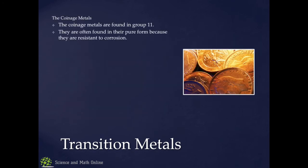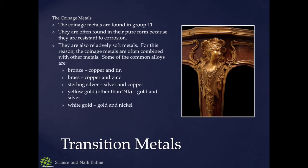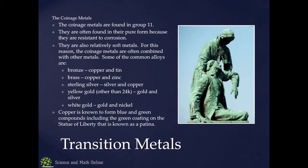Coinage metals — found in group 11. They are often found in their pure form because of their resistance to corrosion. They are relatively soft and generally tend to be combined with other things — we get brass, bronze, sterling silver, 14 karat gold, 10 karat gold, white gold, and such. Copper is the only one known to somewhat corrode — it gets a patina of copper oxide on the outside, which forms a green coating on statues. The Statue of Liberty is made out of copper and has this lovely patina over the entire thing.